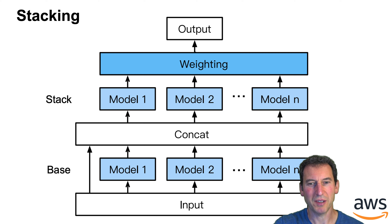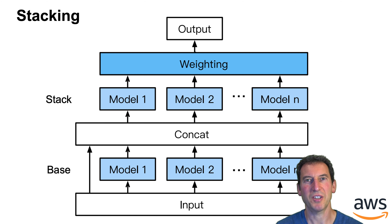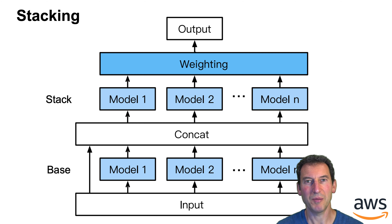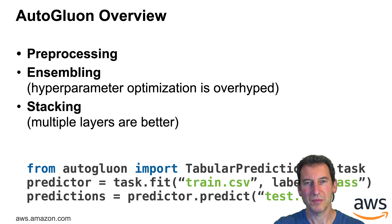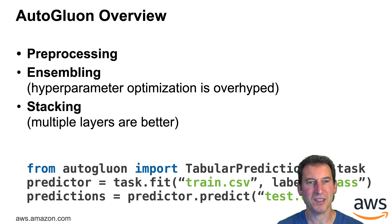Can we do better? As a matter of fact, you can, because you can go and stack things. You take an input, pipe it through all the models, get the predictions as output, combine it with the inputs, and get the next level output, and keep on doing this. And if you do that, you get AutoGluon. The way to invoke it is through three lines of code: import tabular prediction as a task, run the fit function, and then predict.